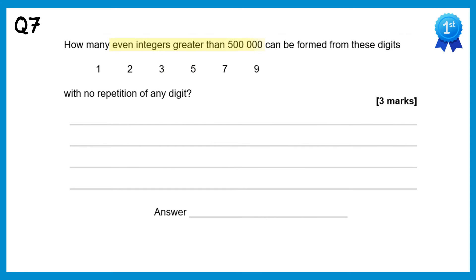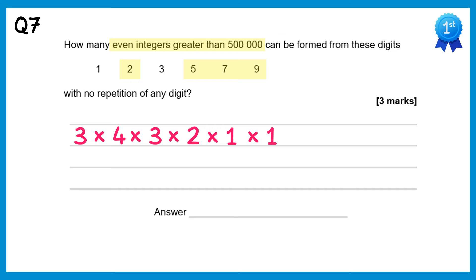For this question, we want an even integer that's greater than 500,000. Now if it's even, it must end in 0, 2, 4, 6 or 8. The only one of those we have in the list is 2, so it must end in 2. If it's greater than 500,000, it's going to need to start with a 5, 7 or 9, so there are three ways for selecting the first digit. There's one way of selecting the last digit — that's the 2. So we've used two digits up, so there are four left. So it's times 4, times 3, times 2, times 1 for the remaining digits. If you times all of this, you get 72.